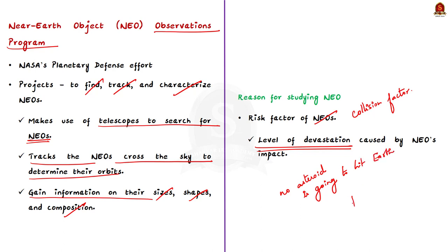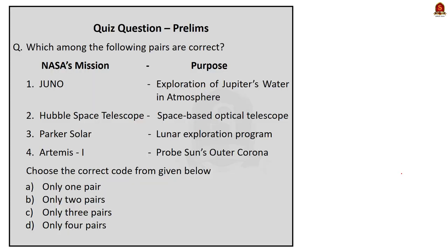Importantly, no asteroid larger than 150 meters has a significant chance of hitting Earth for the next 100 years, so we don't have reason to worry. All these efforts — the near-earth observation programs and DART — are just precautionary measures. As we all know, prevention is better than cure. That's all about this article. We saw NASA's mission DART, its objectives, what near-earth objects are, and the near-earth objects observation program. Let's move on to the next article.